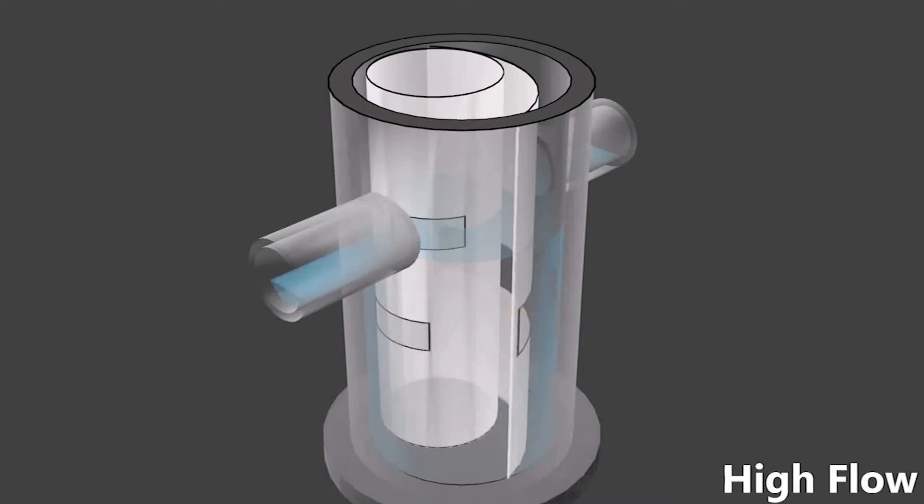The inlet to the inner chamber is restricted such that high flows bypass the inner chamber and go through the outer baffle wall itself.